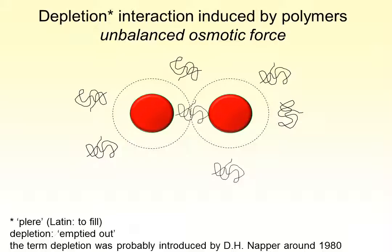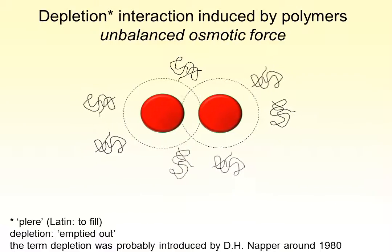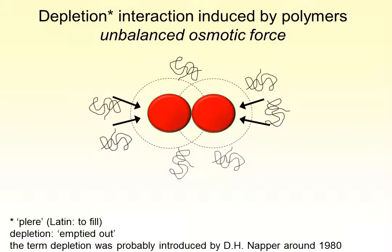Now the osmotic pressure of the polymer chains gets unbalanced. Hence, the polymers push the particles together because of an unbalanced osmotic pressure. At the same time, the volume available for the polymer chains increases when the depletion zones overlap.